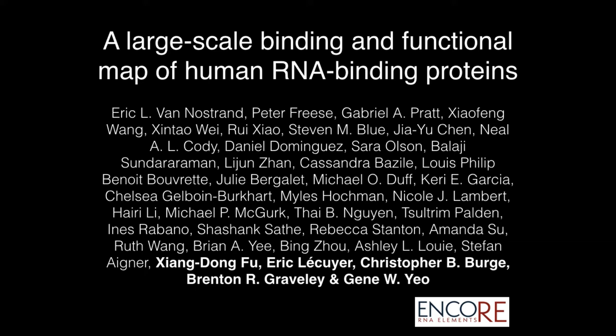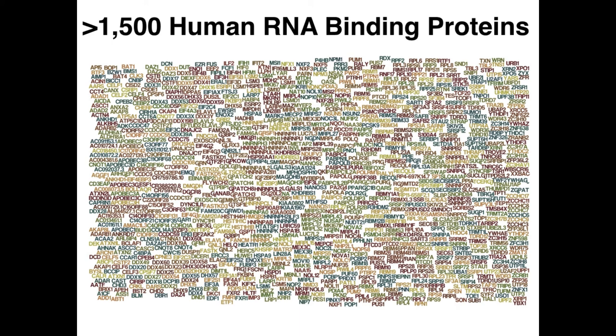Today I'd like to tell you about the work we published as part of the ENCODE 3 publication package that recently came out. Our goal is to generate a large-scale binding and functional map of human RNA binding proteins. We believe there are approximately 1500 different genes in the human genome that encode RNA binding proteins, and the majority have only been characterized based on having a motif known to function as an RNA binding domain, or identified in mass spec experiments as proteins that associate with messenger RNAs.